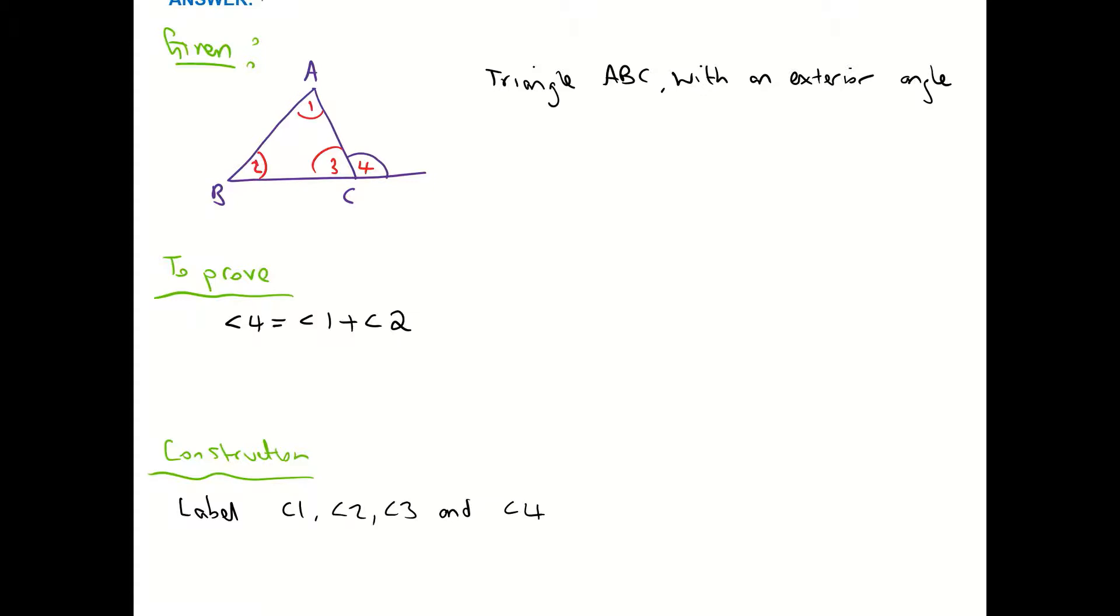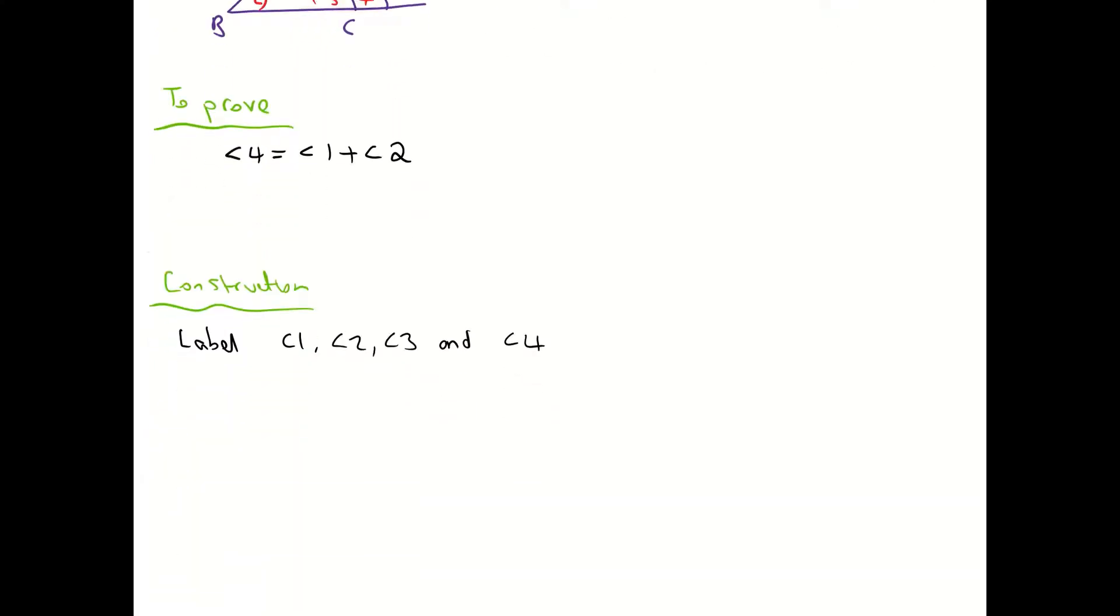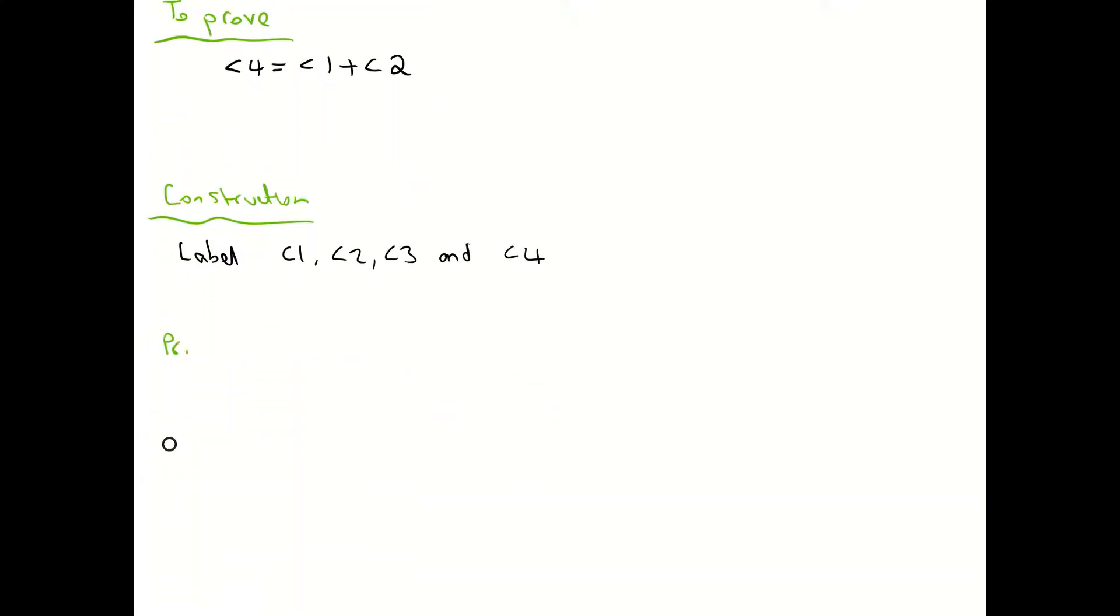We've done our construction and we've done our given. Now it's a fairly short and easy theorem, this one. Now we want to do our proof, our final step. And our proof is going to be writing down first of all anything we know.